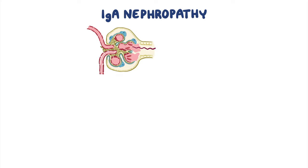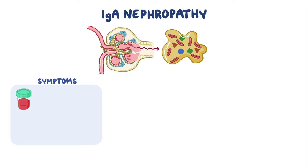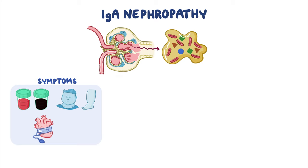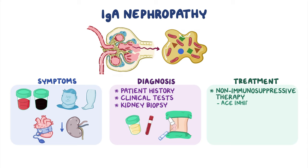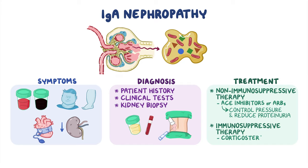As a quick recap: IgA nephropathy is a kidney disease which affects the glomeruli, causing leakage of red blood cells and blood proteins into the urine. The kidney damage may cause bloody or dark urine, puffiness of the face and legs, and high blood pressure in some cases with degraded kidney function. Diagnosis is suspected based on patient history and clinical tests, and established by kidney biopsy. Treatment includes non-immunosuppressive therapy with ACE inhibitors or ARBs to control pressure and reduce proteinuria and thus delay progression of the disease, and rarely immunosuppressive therapy such as corticosteroids.